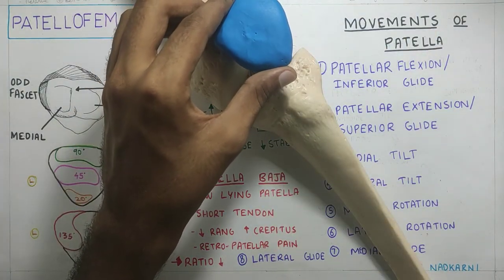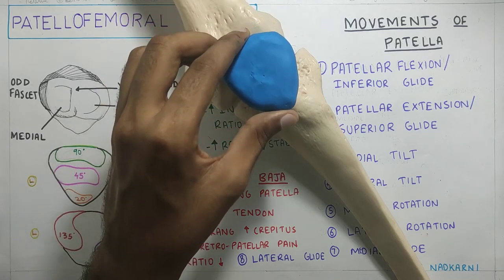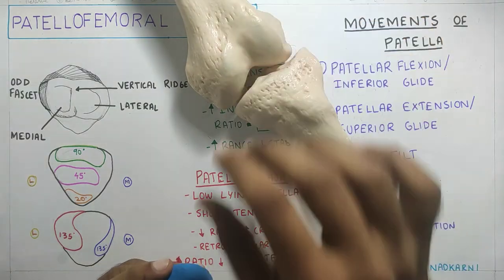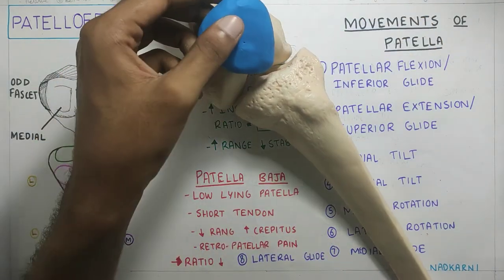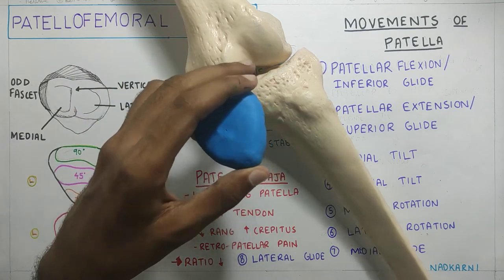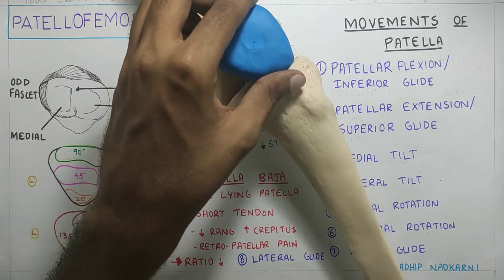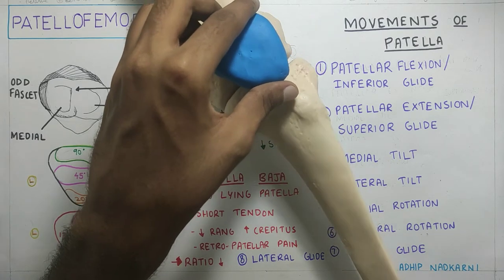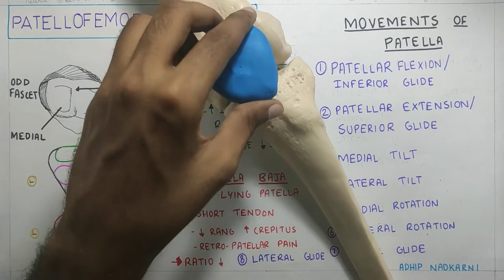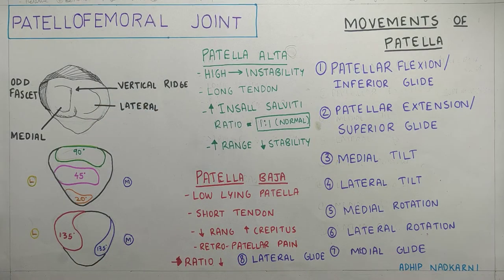In extension, the patella is relatively on the lateral side. As you start going into flexion, the patella moves downward and also medially. This occurs due to the lateral condyle of the femur and also the unlocking of the knee joint. During unlocking, the tibia medially rotates and the patella starts gliding medially.